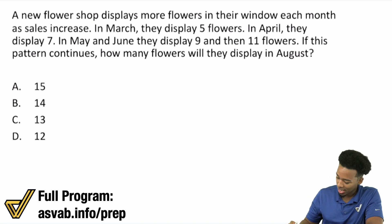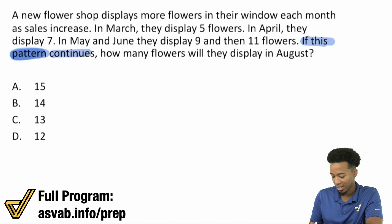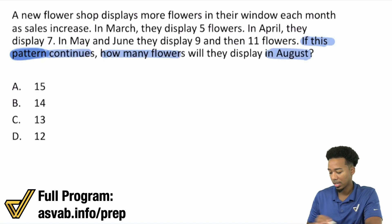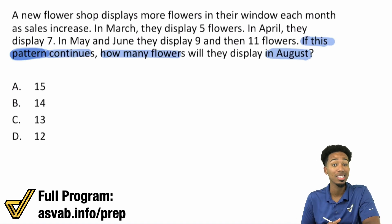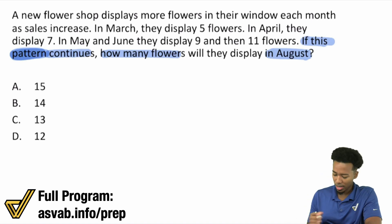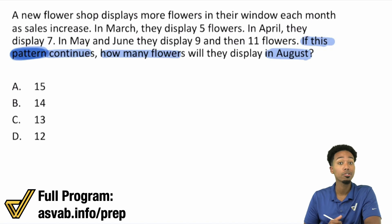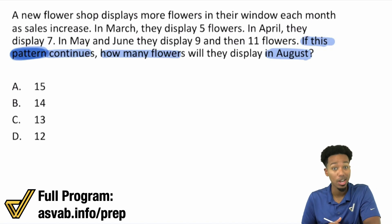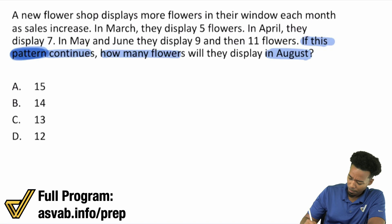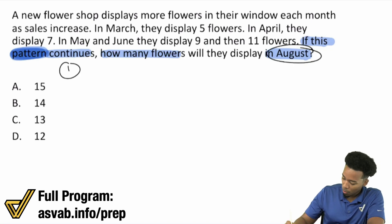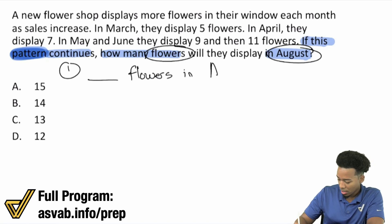So what I see right here, it says, if this pattern — pay attention there — if the pattern continues, how many flowers will they display in August? So right there, we have a huge hint that there's a pattern to be recognized. We want flowers in August. So blank flowers in August.